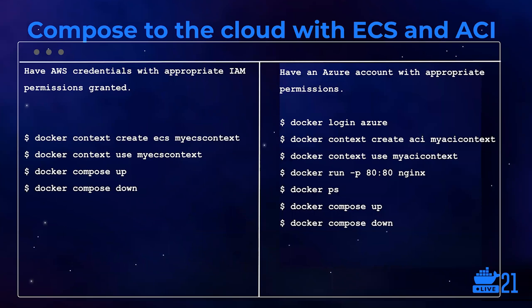Deploying to production is simpler than ever with our new Compose integration that enables you to deploy directly to Amazon ECS and Azure ACI with the same great Docker experience that you're used to. For ECS on AWS, you will need to grant IAM permissions to your credentials, create a Docker context for ECS with all the appropriate information to your ECS environment, use that context, and then simply run Docker Compose up and Docker Compose down. For ACI on Azure, similarly, you'll need an Azure account with appropriate permissions, then you can Docker log into Azure, create an ACI context, use that context, and then you can run an image, run Docker PS, or run Docker Compose up and down.